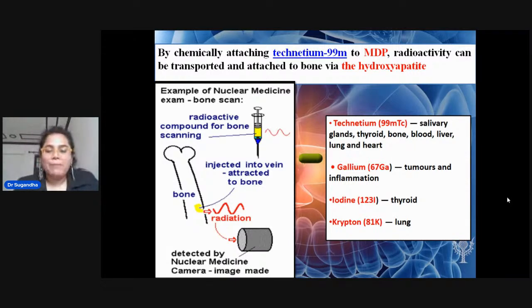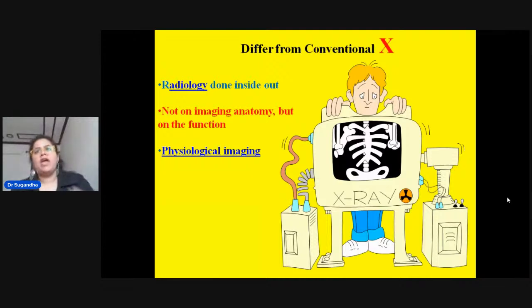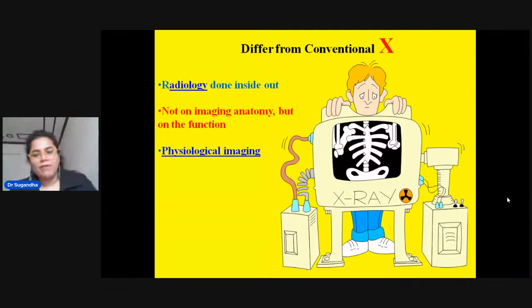Once the compound reaches the target tissue — in this case bone — it emits gamma rays which are captured by gamma cameras, forming images. Now, in layman's terms, one might ask: why do we need nuclear medicine when we have plain film radiography, OPG, lateral, PA, AP views, CT scan, MRI, and CBCT already available?